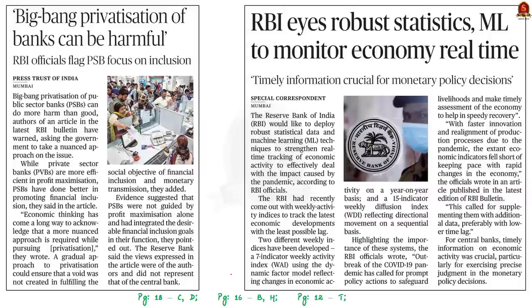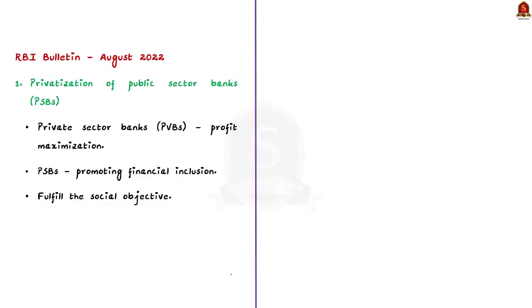Yesterday, the Reserve Bank of India released the August 2022 issue of its monthly bulletin. The bulletin consists of analytical points based on data collected by Reserve Bank. These two Hindu articles here are written with respect to this bulletin points only. The bulletin has six points in total and we are going to see all of them. The first point is regarding privatization. Privatization of public sector banks is a widely discussed topic in India. The point highlights that privatization of public sector banks can do more harm than good. Private sector banks are more efficient in profit maximization but public sector banks have done better in promoting financial inclusion. Public sector banks help to fulfill the social objective which is financial inclusion.